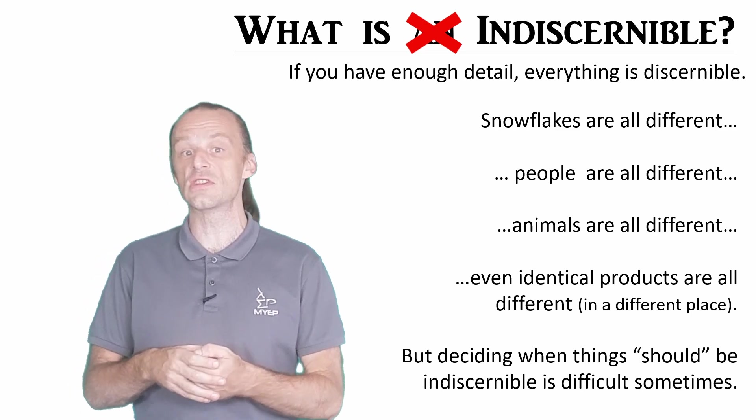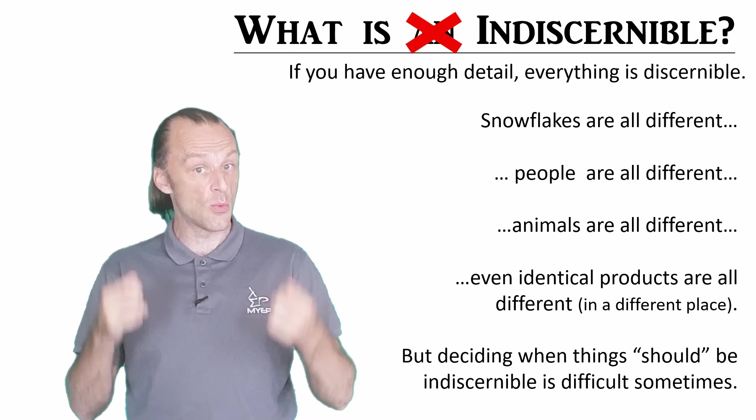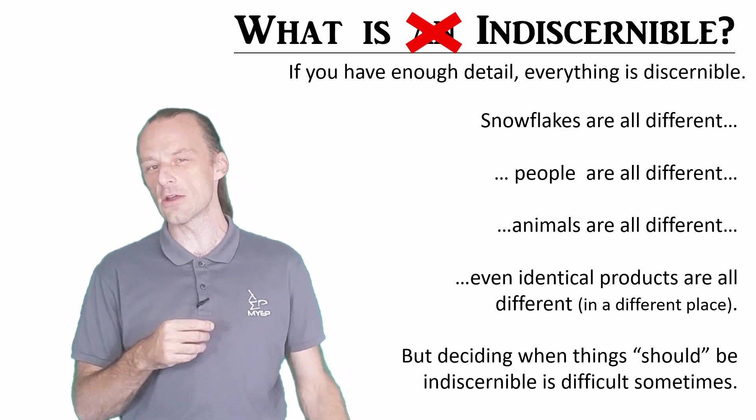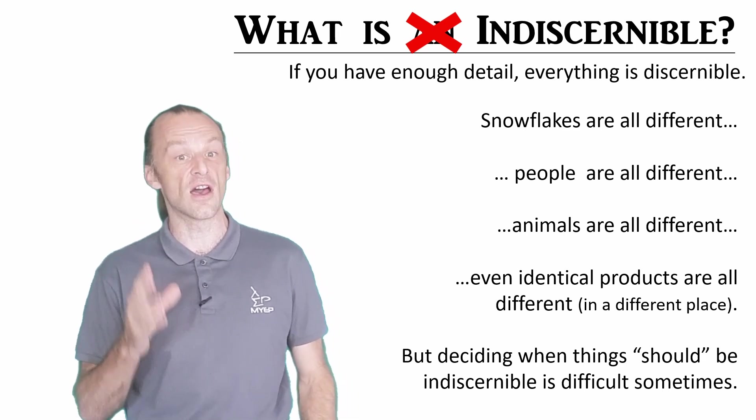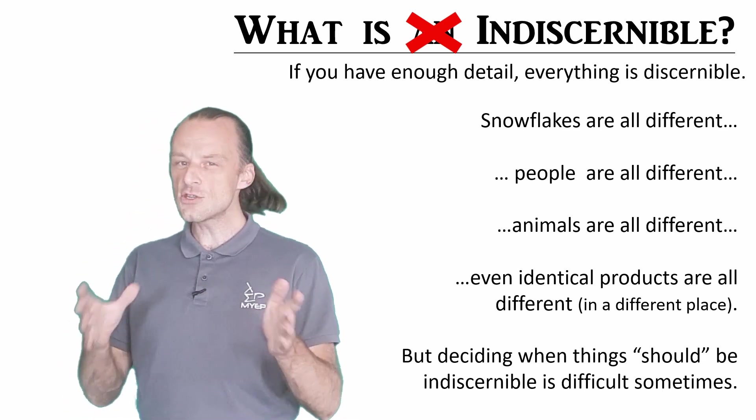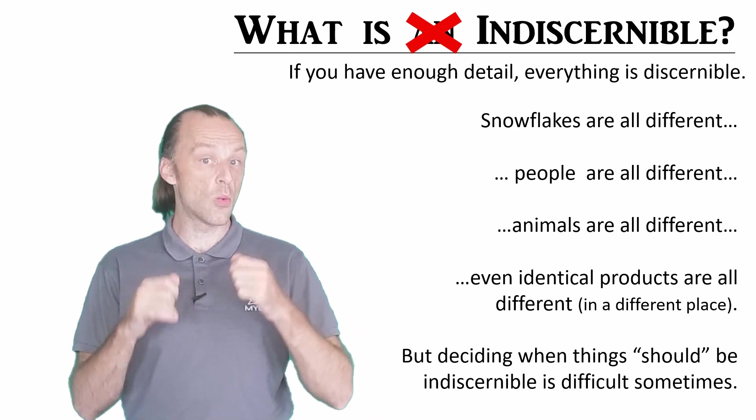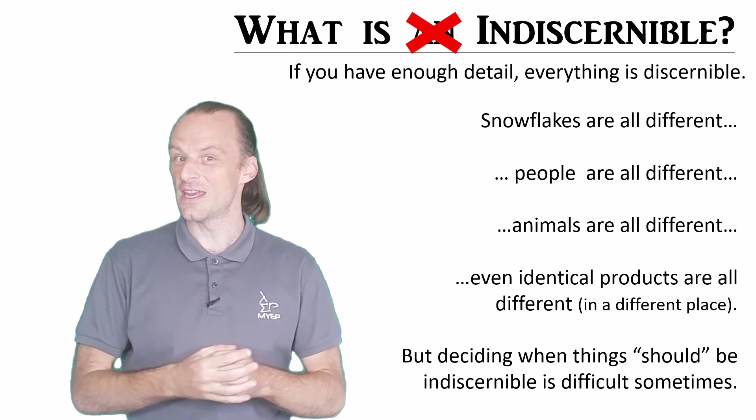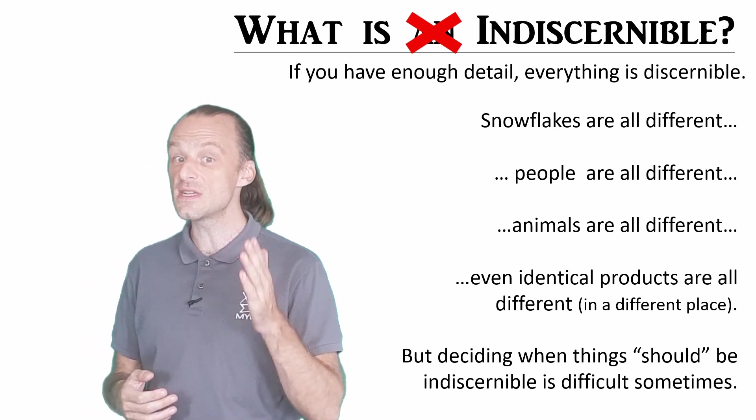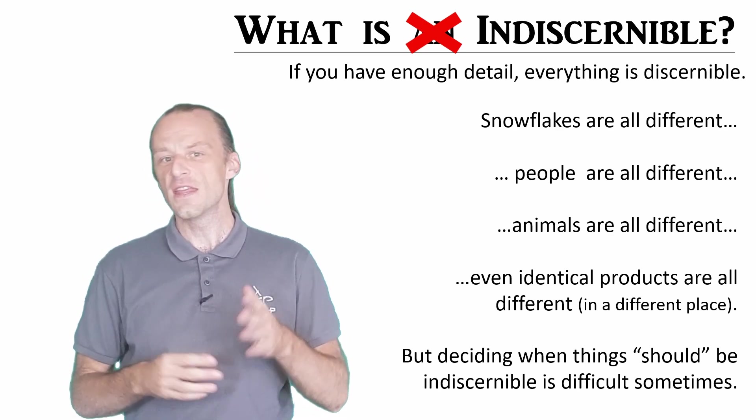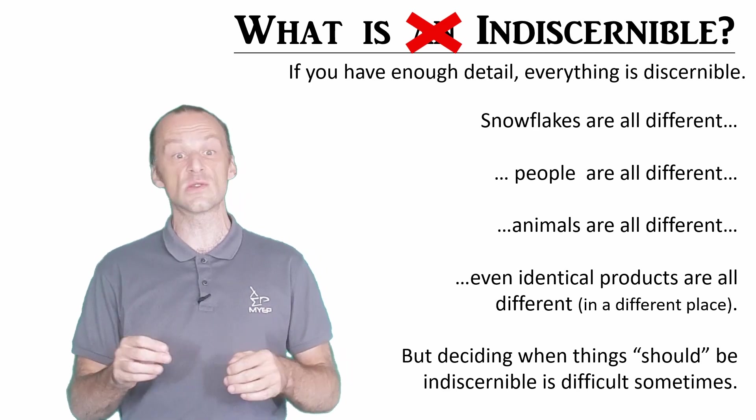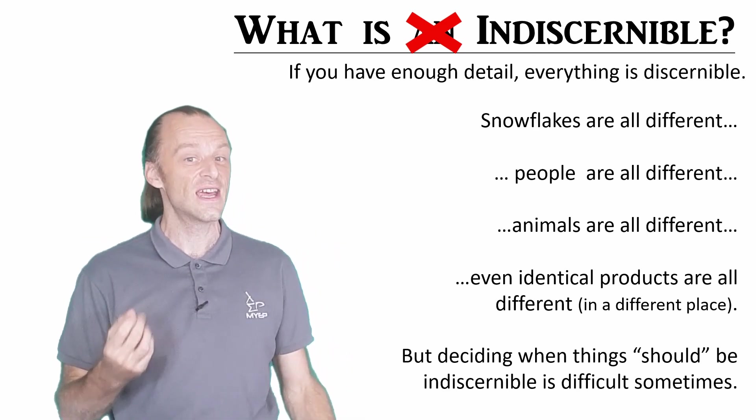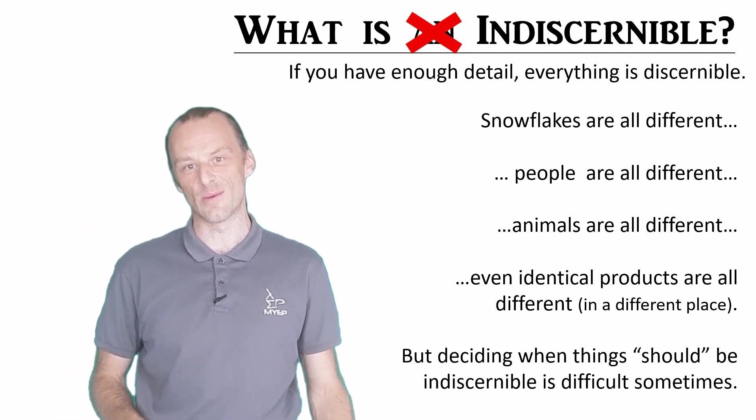Humans do some pretty terrible things to people they think are different from them. As you can probably see, deciding when things are indiscernible and when they should be indiscernible comes back to values, which we discussed in the main video. This leads us again towards areas where our laws become uncertain, and so this is where we will stop for now.